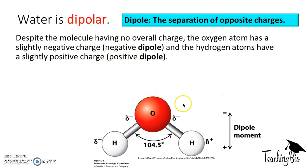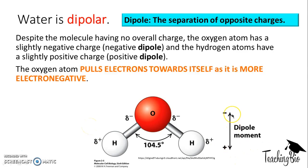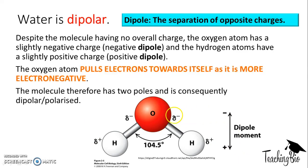Despite having no overall charge, the oxygen atom has a slightly negative charge — it has a negative dipole, given by the delta symbol: delta negative. The hydrogen atoms have a slight positive charge, so they're delta positive. The oxygen atom pulls electrons from the hydrogen towards itself because it's more electronegative, and that's what makes it slightly negative on those sides and makes the hydrogen slightly positive. The dipole moment is in that direction, and because of this it's dipolar, or said to be polarised.